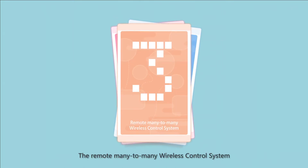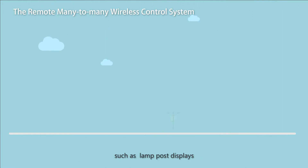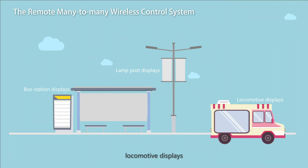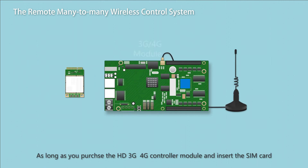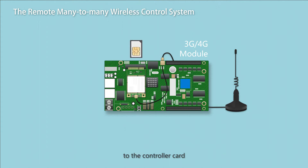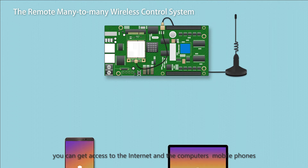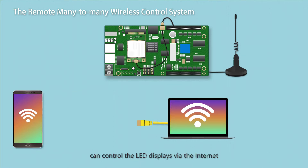The Remote Many-to-Many Wireless Control System is used to control multiple LED displays from far distance, such as lamppost displays, bus station displays, locomotive displays, and traffic guiding panels. Purchase the HD 3G/4G controller module and insert the SIM card to the controller card to get access to the Internet, allowing computers and mobile phones to control LED displays via the Internet.